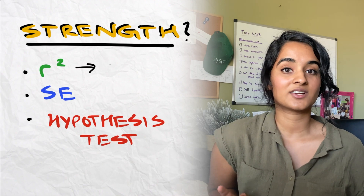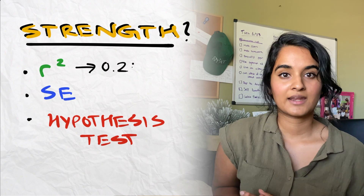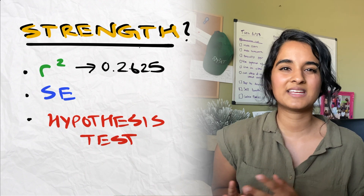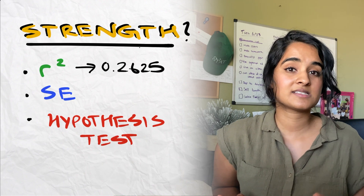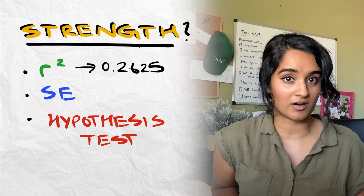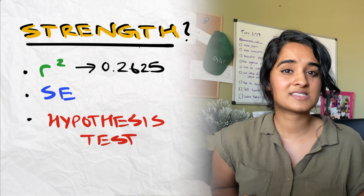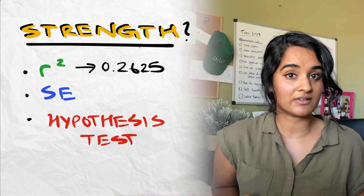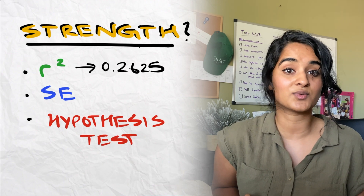R-squared here is 0.26. Overall, we want an R-squared that's pretty high — anything above 0.7 — but again, it's all relative, because R-squared tells you the percent of variability that's due to the model. To interpret this, we could say that 26% of the variability in the predicted y values, or plant height, is due to the regression model. If you want to know more about the derivation of R-squared and SST, SSR, and SSE, there'll be a video linked in the description below.